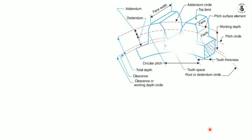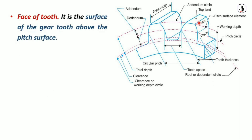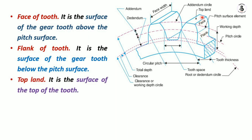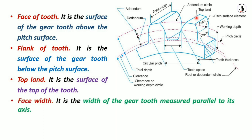Looking at the nomenclature of the gear again: the face of the tooth is the surface of the gear tooth above the pitch surface, which is related to the pitch circle. The flank of the tooth is the surface of the gear tooth below the pitch surface. The top land is the surface at the top of the tooth. Face width is the width of the gear tooth measured parallel to its axis.